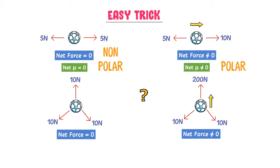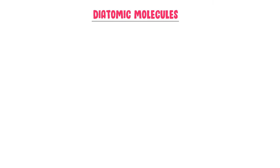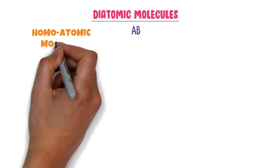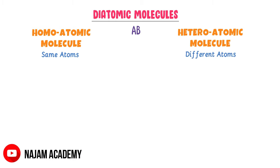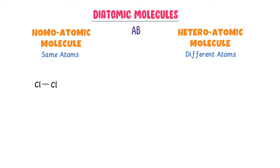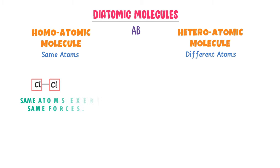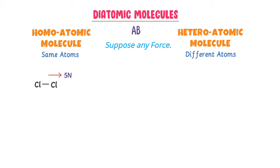But how can we use this trick? Consider diatomic molecules of AB₂ format. Diatomic molecules are divided into two categories: homoatomic molecules, made up of the same atoms, and heteroatomic molecules, made up of different atoms. For example, consider a molecule of chlorine gas. On both sides are the same atoms. Same atoms exert the same forces on the shared pair of electrons. If one chlorine exerts a 5N force in one direction, the other chlorine also exerts 5N in the opposite direction.